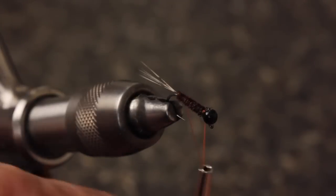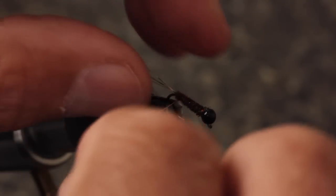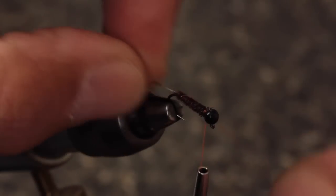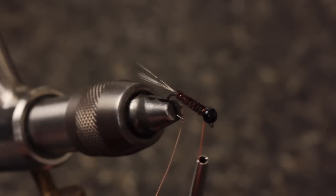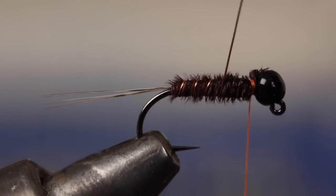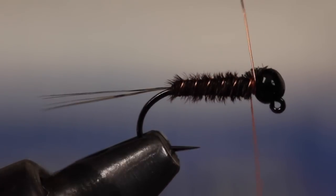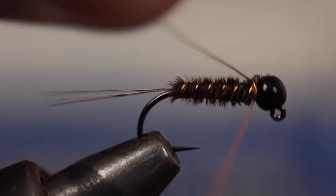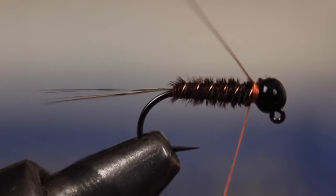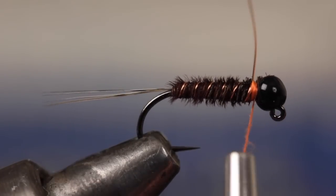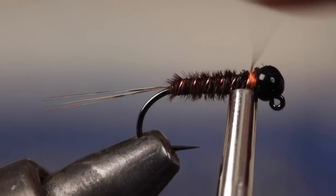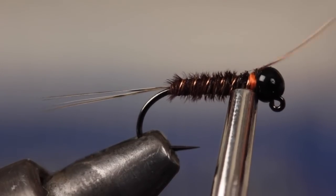You can counter wrap with the wire if you like, but I generally don't as I find a normal wrap to be quicker and don't really notice a difference in terms of durability. When you reach the bead, secure the wire with tight wraps of tying thread and then helicopter to break it off close. Bracing the fly with the bobbin nozzle will help stabilize things while you turn the wire.